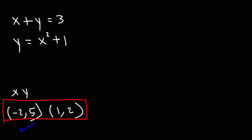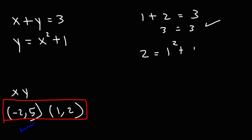Now let's check the second solution. When x is 1 and y is 2, that equals 3, and when y is 2 and x is 1 it works as well. So both solutions are correct, because sometimes out of your list of possible solutions not all of them will be correct.